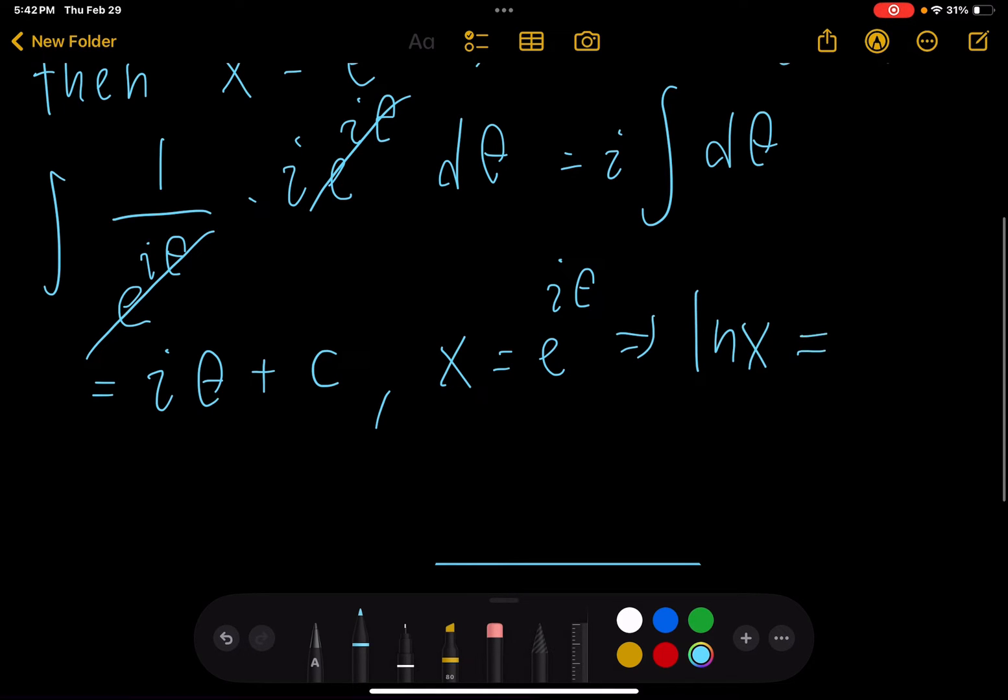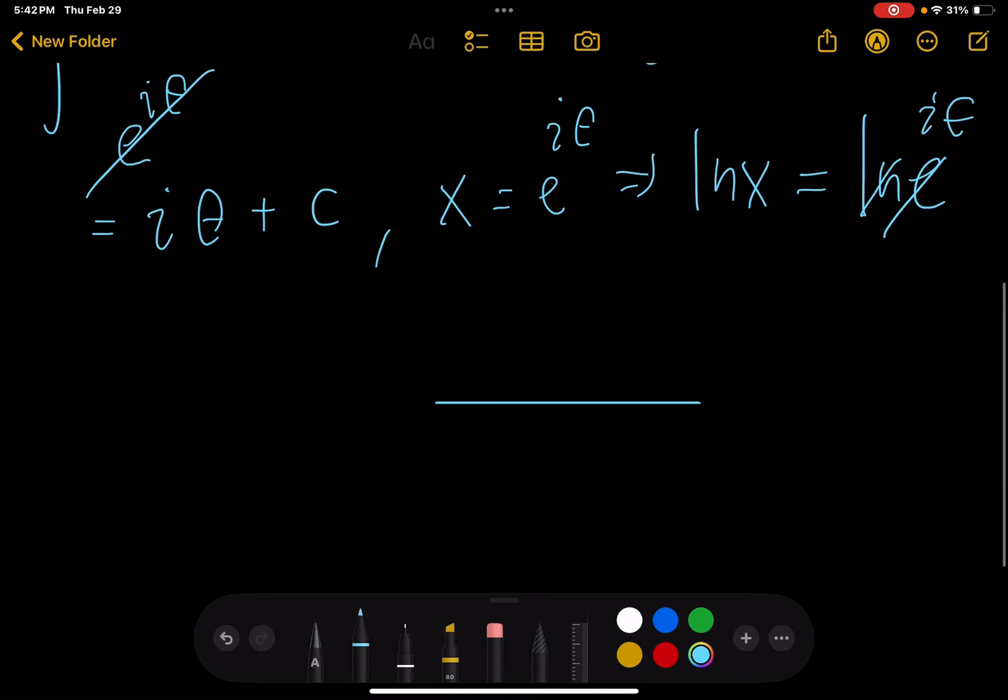The natural log of x is the natural log of e to the i theta, but the natural log and e cancel. So we're left with the natural log of x equals i theta,